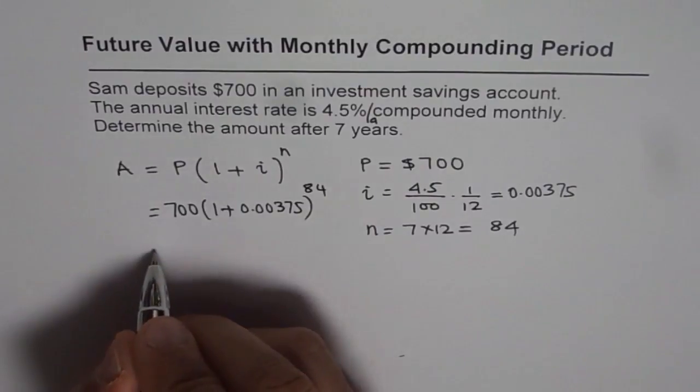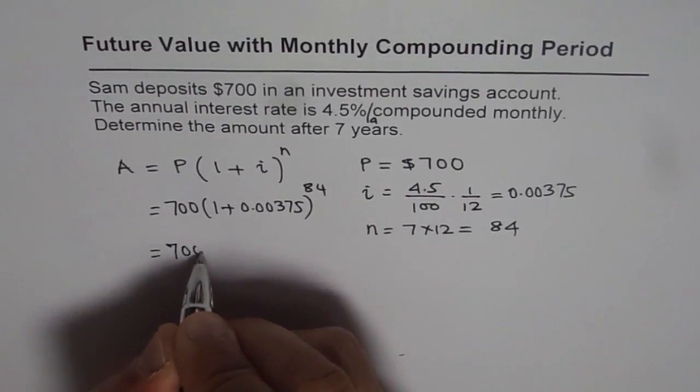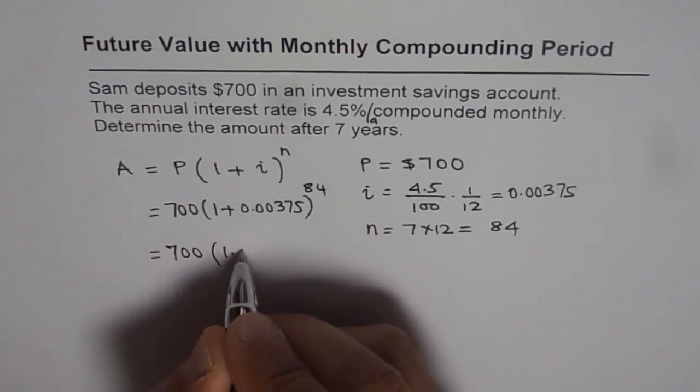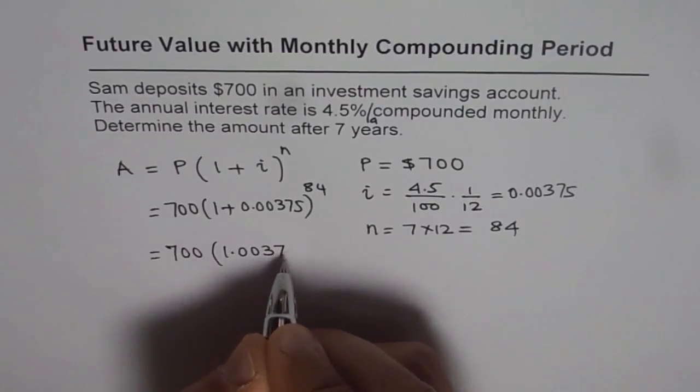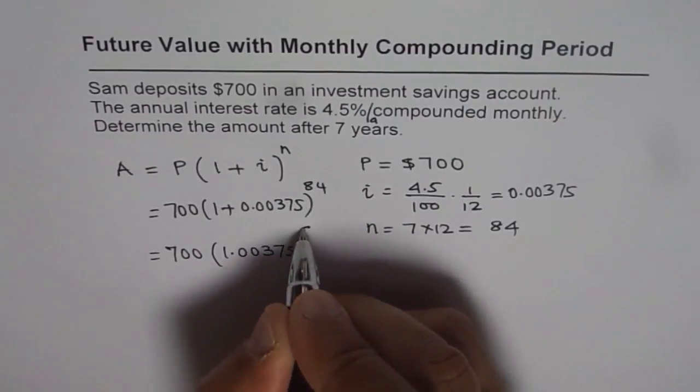So we can use the calculator to find the answer. 700 times 1.00375 to the power of 84.